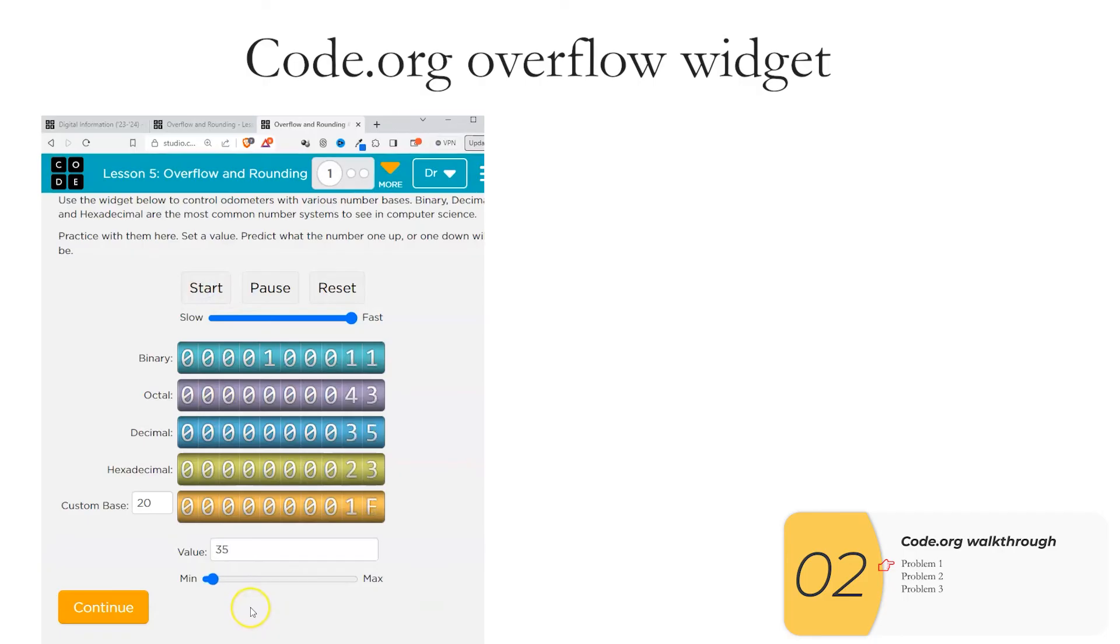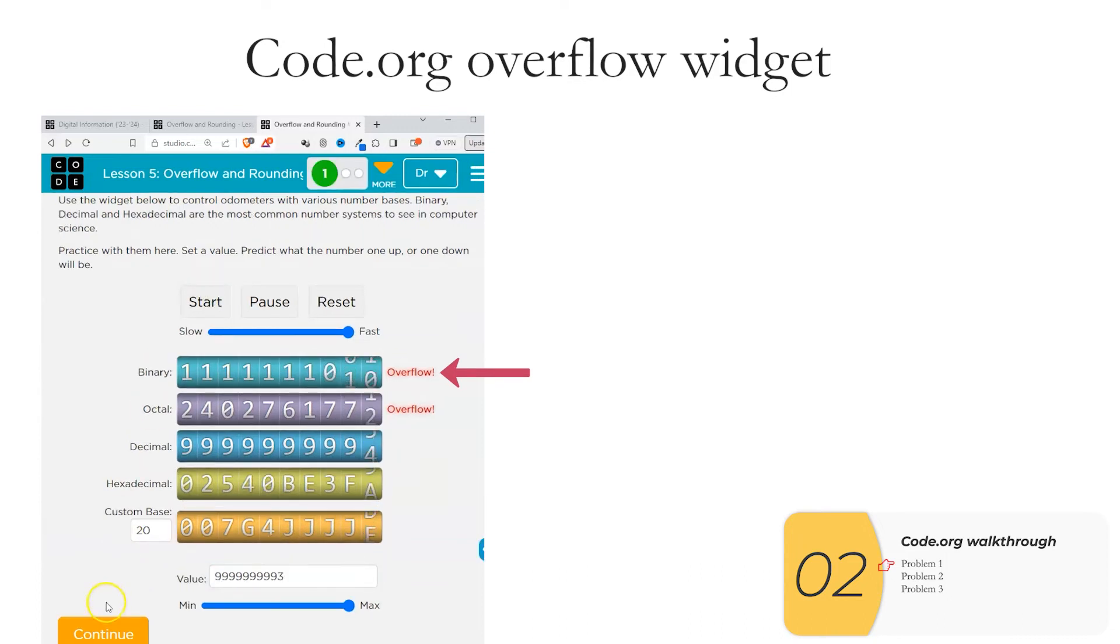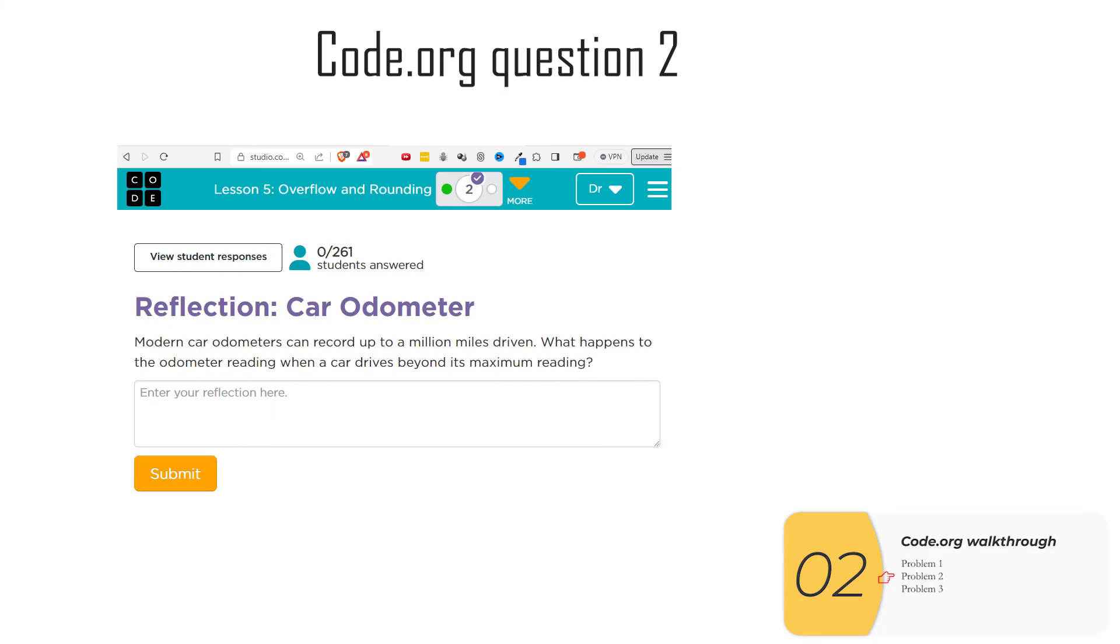Here's the walkthrough of the code.org activities. The first is the overflow widget. So you see here, this looks just like the car odometer. I'm taking numbers on the bottom, my values. I'm converting them into binary. Here, I jumped ahead a bunch. And the numbers are increasing. At some point, I don't have enough bits for the number I'm trying to represent. And the numbers overflow. And I get an overflow error. At some point later, even in the decimal system, you'll see this as well. Here it is. The decimal system overflows and goes back to zero. This widget is just to show you so you can see how it looks rather than just having somebody explain it to you.